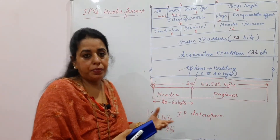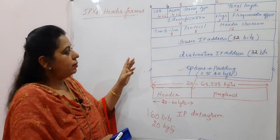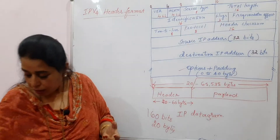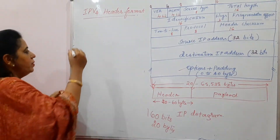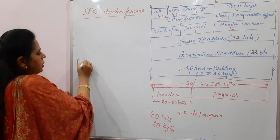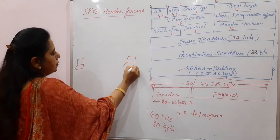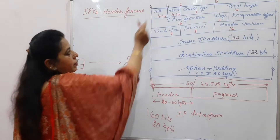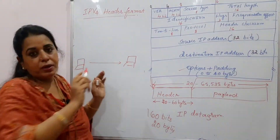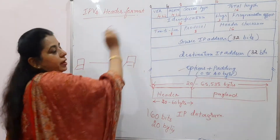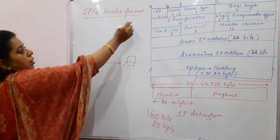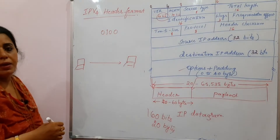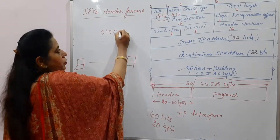When we say these are the different fields in the header part, the network has to handle the packet depending on the values placed in the header. First, whenever a packet travels from sender to receiver, the first information is the version of the protocol. This is IPv4 — Internet Protocol version 4. Four bits are used to indicate that this packet belongs to version 4, and the binary value will be 0100.